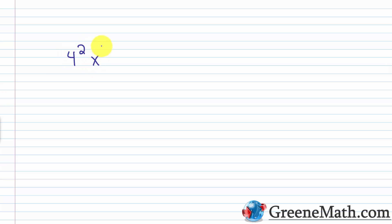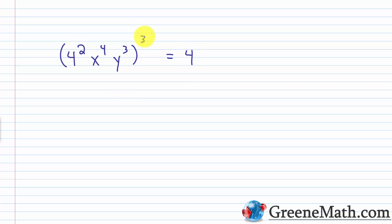Let's look at another example: four squared x to the fourth power y cubed, all raised to the third power. We raise each factor using the power-to-power rule individually. Four squared to the third power is four raised to two times three, which is four to the sixth. X to the fourth raised to the third is x to the power of four times three, or 12. Y cubed raised to the third is y to the power of three times three, or nine. So this simplifies to four to the sixth power, x to the twelfth power, y to the ninth power.